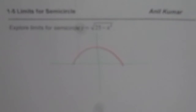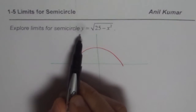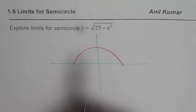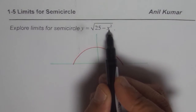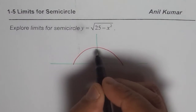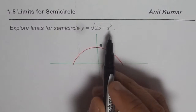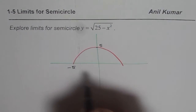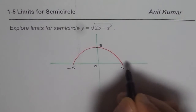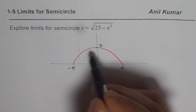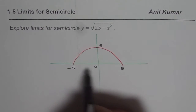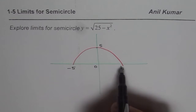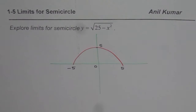Now in this semicircle we are also given an equation. We will follow that equation to help us find the limits at different points. The equation given to us is y equals square root of 25 minus x squared. Now if I put x as 0 then I get 5 as my answer, so at x=0 I have y=5. If I put x as plus or minus 5 I get 0. These two points are minus 5 and plus 5. And we know this is a semicircle with the domain minus 5 to plus 5, or the radius as 5 units.